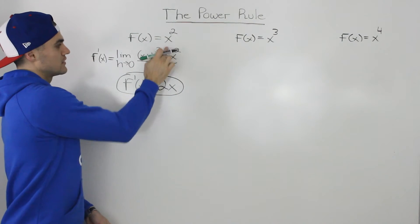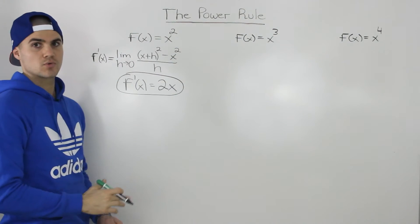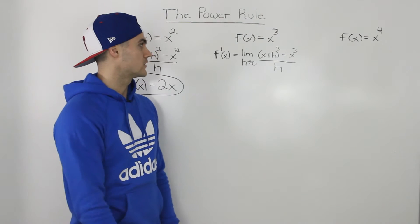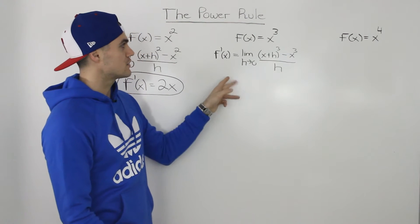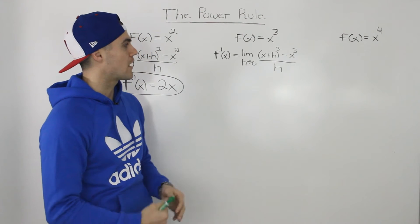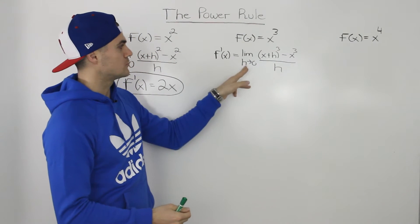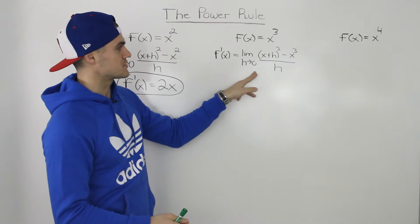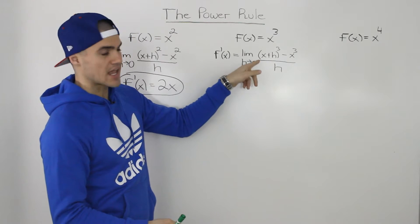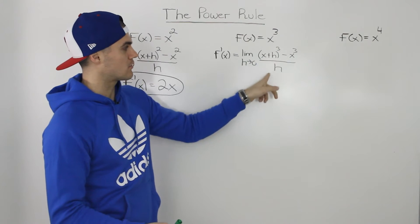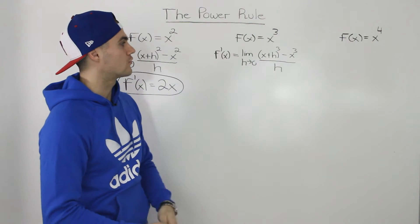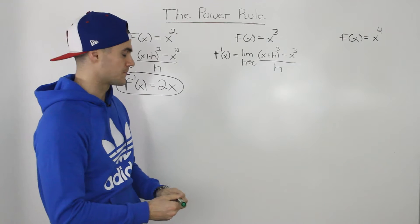So 2x is the derivative of x squared. Following the same process for x to the power 3, the derivative would be the limit as h goes to 0 of (x+h)³ minus x³, all over h.